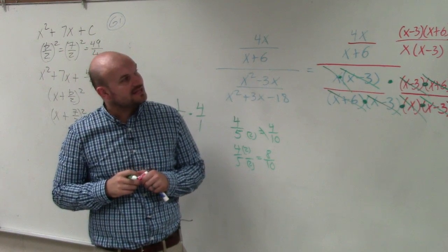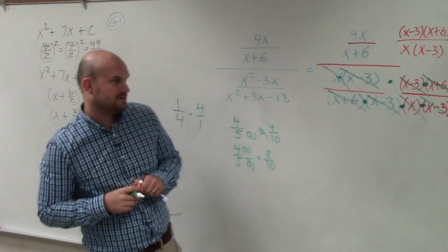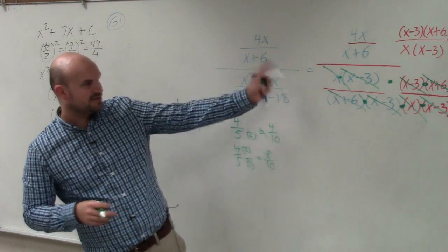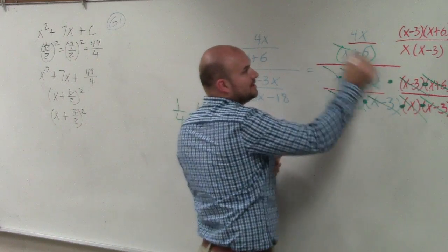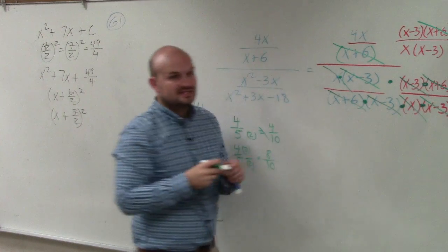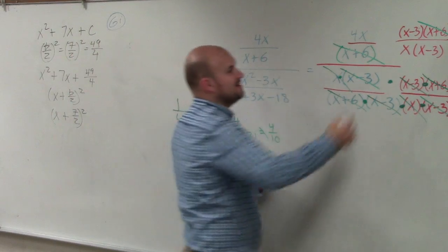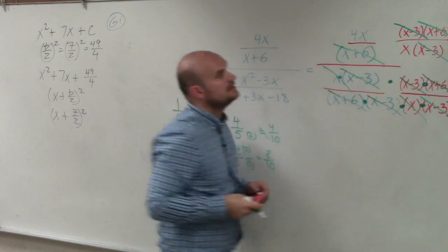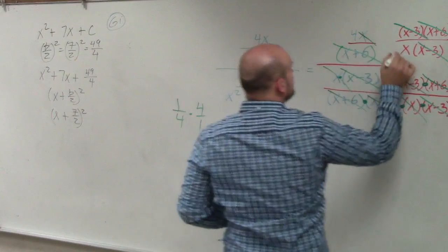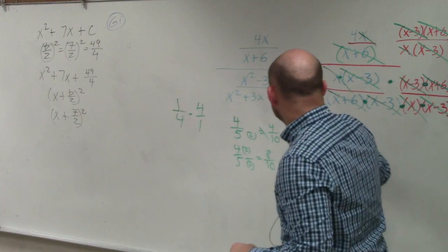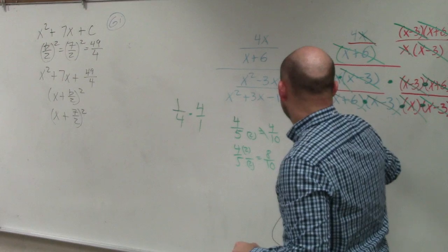And what you guys can see when I now go ahead and do that, they both had an x plus 6. You could have simplified that before, but whatever. Now you can see that by applying the division property, the x plus 6's divide to 1, the x minus 3's, I could have divided earlier, but they are going to divide to 1, and the x over the x divide to 1. Leave me with a final answer of 4.